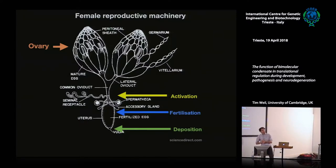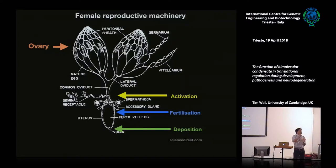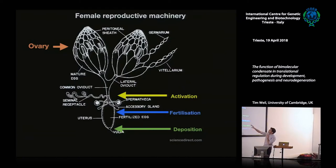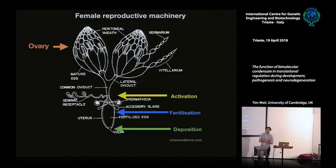For those less familiar with the female reproductive machinery in the fly: it starts with two large ovaries, which we'll dissect this afternoon. These ovaries consist of ovarioles, each starting with a stem cell population and containing egg chambers at different stages — almost like an assembly line producing a mature egg. As the egg becomes ovulated, it passes into the lateral oviduct, then the common oviduct where egg activation takes place, followed by internal fertilization in the uterus via stored sperm in the seminal receptacle, then deposition through the vulva.